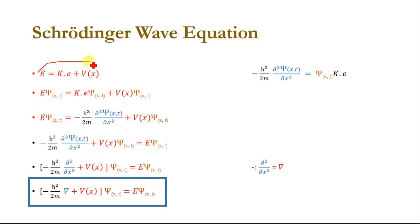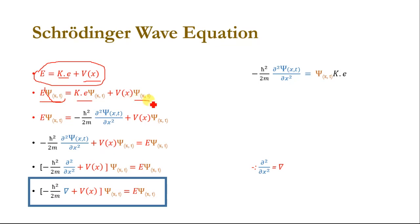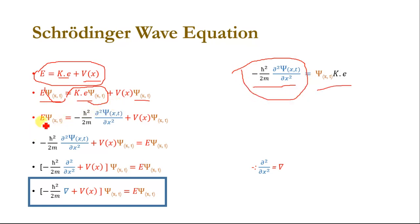We know the Hamiltonian (total energy) of a system equals kinetic energy plus potential energy. Multiplying this equation by the wave function psi(x,t) gives: E·psi(x,t) equals kinetic energy times psi(x,t) plus potential energy times psi(x,t). Replacing kinetic energy times psi(x,t) with the derived term, we get E·psi(x,t) equals minus h-bar²/2m times ∂²psi(x,t)/∂x² plus V(x) times psi(x,t).